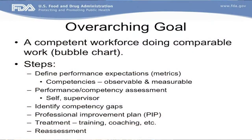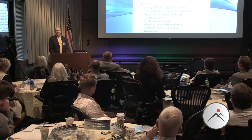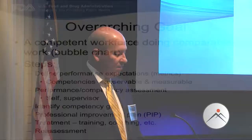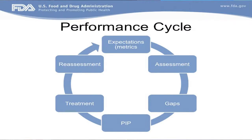The plan addresses what can we reasonably do to start addressing some of these gaps - it could be a cycle that continues. After the professional improvement plan is put together, a treatment is identified. Training is one treatment, but there could be other treatments. Then there's a reassessment: for this cycle we address certain gaps, put a treatment in place, and next year go through another reassessment. This is a continuous cycle.